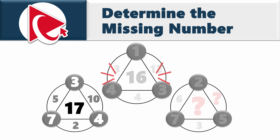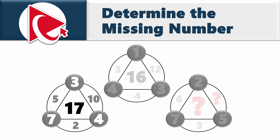In the second shape, the middle number is 16. The numbers in the small circle are 3, 4, and 1. And the numbers inside the large circle are 12, 4, and 3.